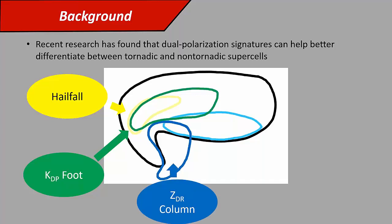The ZDR column is kind of an opposite of that in some ways. It's an area of higher ZDR, so larger, more oblate drops that are lofted above the environmental freezing level. This is an updraft signature, a proxy for the location of the updraft, potentially its size, and it can maybe tell us something about the microphysics of that updraft.